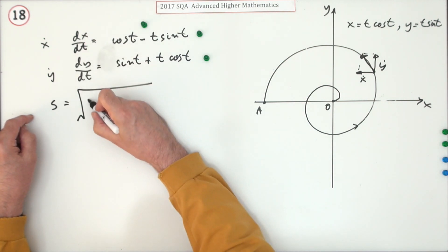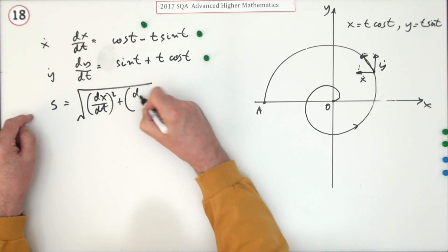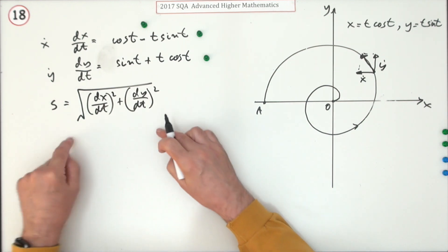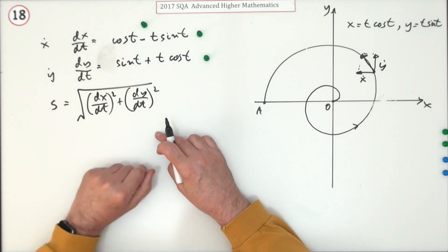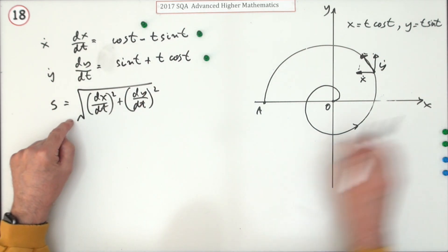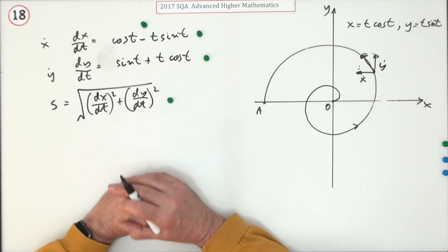I'll just put that part down to begin with. Could write x dot all squared, but I'll put this down: dx/dt squared plus dy/dt squared. Didn't need to put that down. You could have gone straight in with the square root of these two parts.